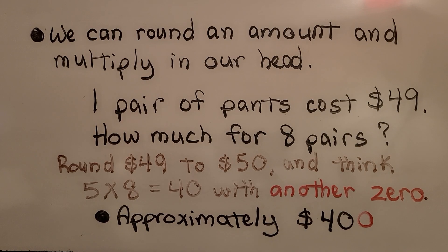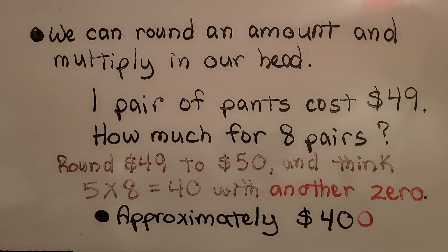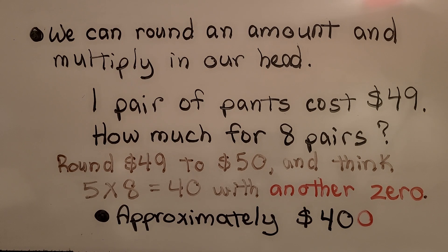We can round an amount and multiply in our head. If we're at a store and we see that one pair of pants costs $49 and we need to buy 8 pairs, how much for 8 pairs? We just round $49 to $50 and think: 5 times 8 is equal to 40 with another zero for 50 times 8 — that would be approximately $400.